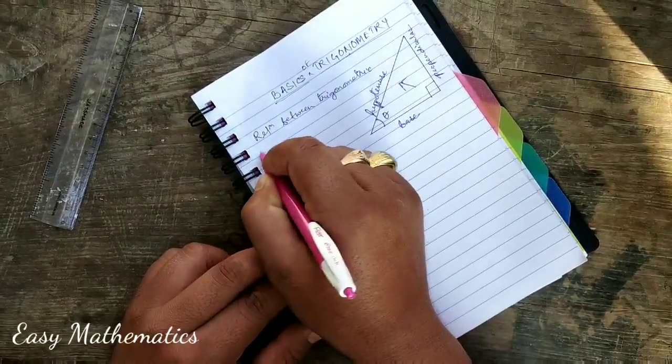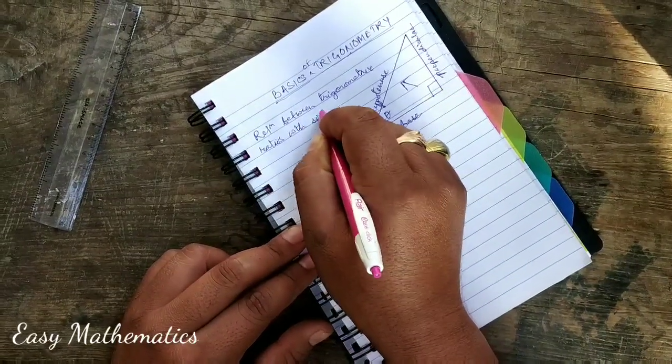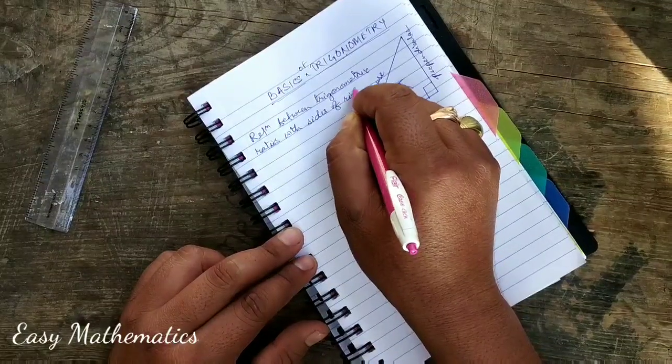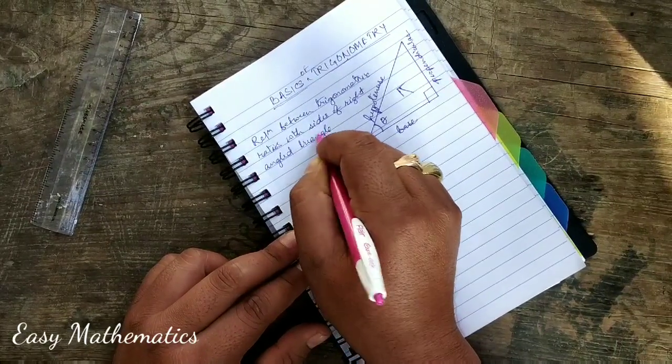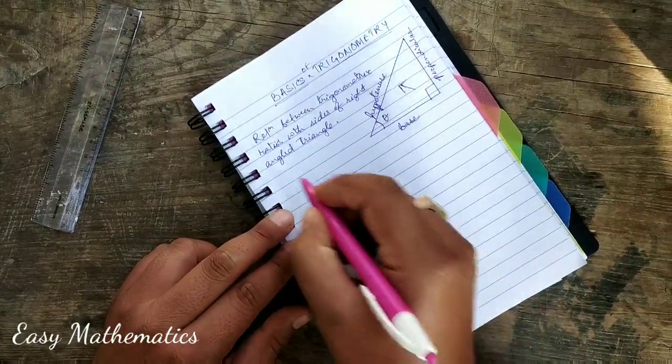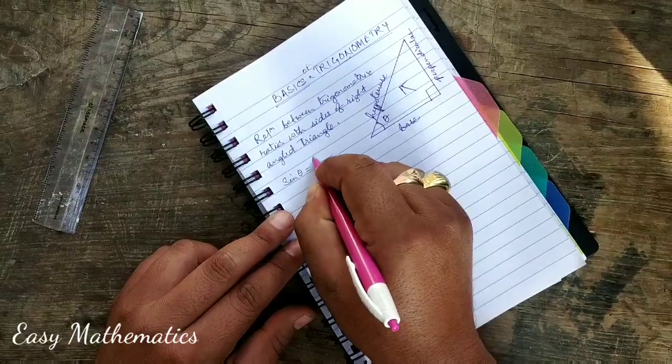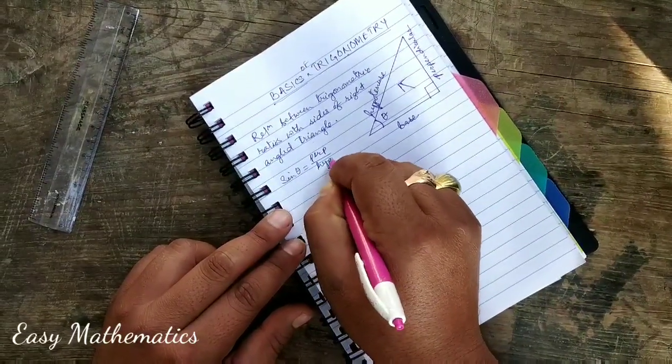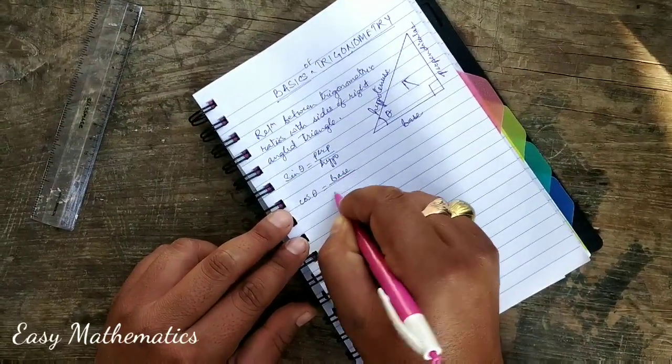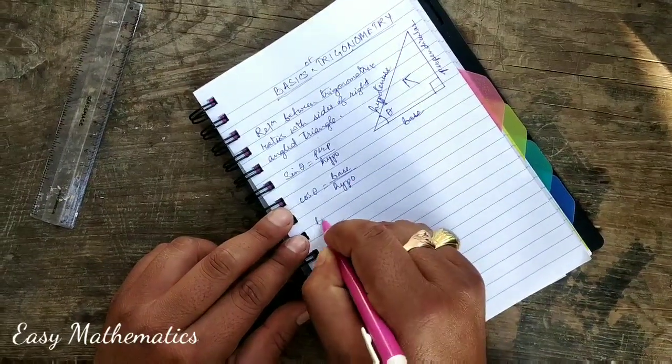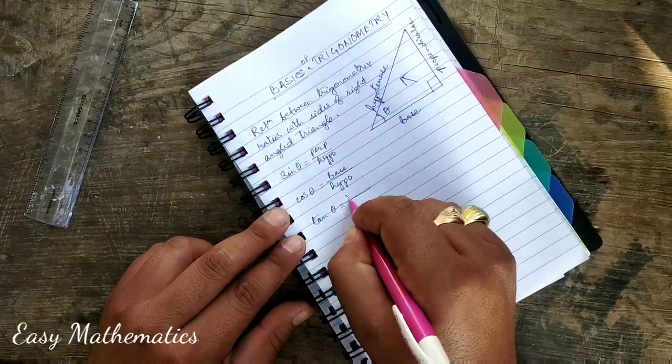Trigonometric ratios with sides of right angle triangle: sin theta equals perpendicular by hypotenuse, cos theta equals base by hypotenuse, tan theta equals perpendicular by base.